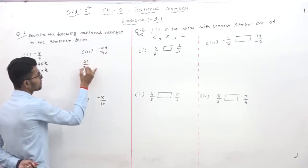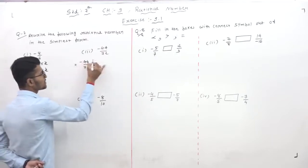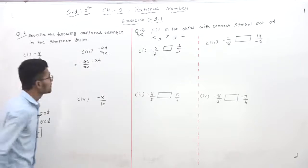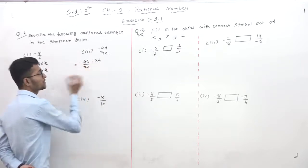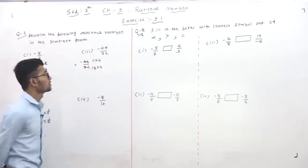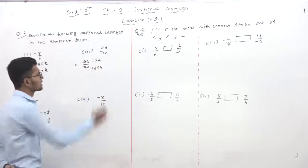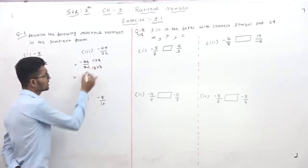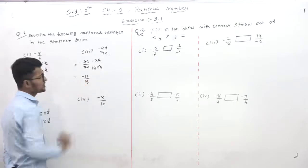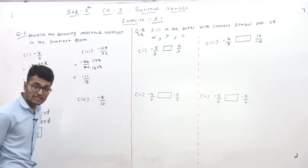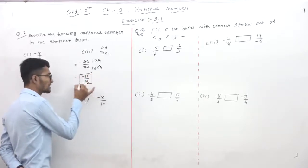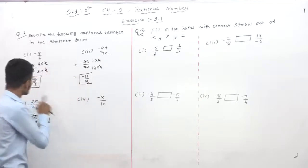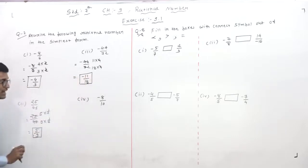Then minus 44 by 72. Write it down: 44 is 11 multiplied by 4, and 72 is 18 multiplied by 4. The 4 and 4 cancel out. Remaining: minus 11 over 18. No further cut is possible between 11 and 18, so minus 11 by 18 is our simplest form — that means maximum cutting is done.